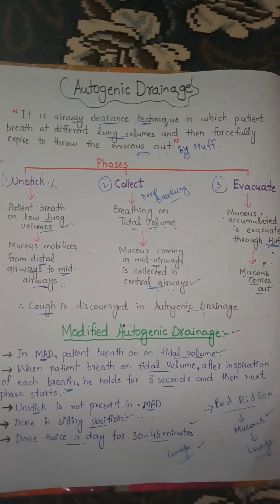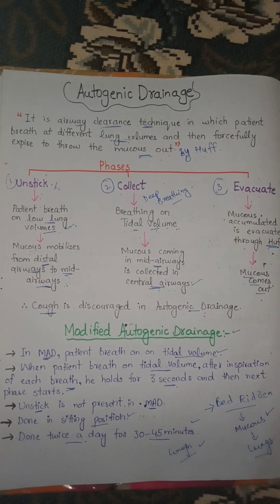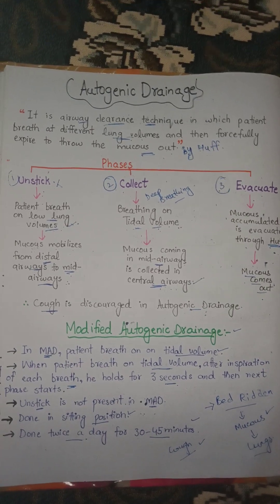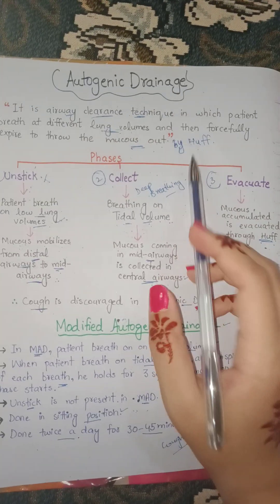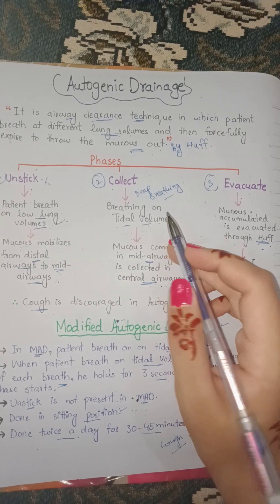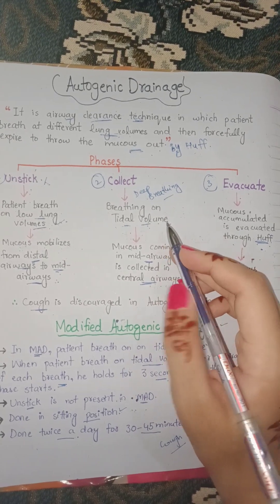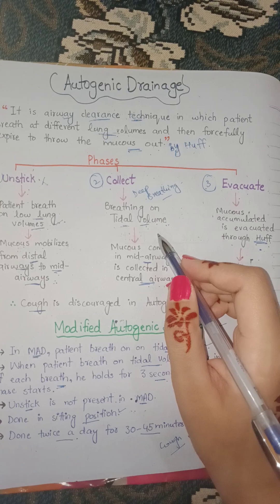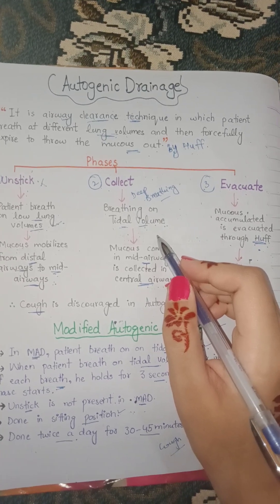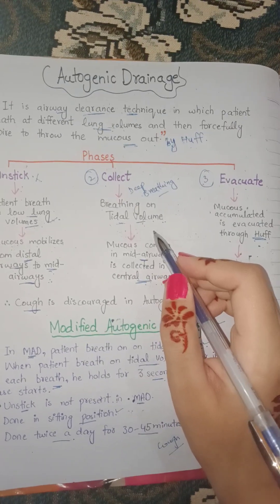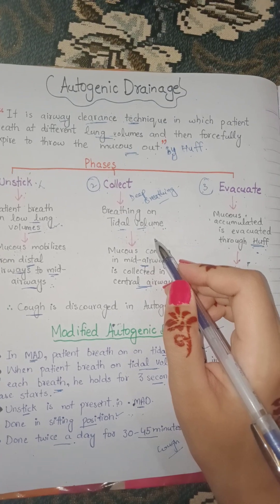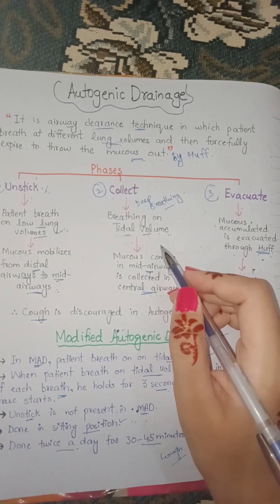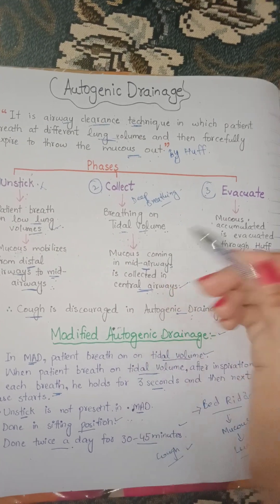In layman's terms, to guide your patient on how to do autogenic drainage, tell them: take a deep breath, hold the breath for about two minutes, and then expire the mucus out. Repeat this technique three to four times.